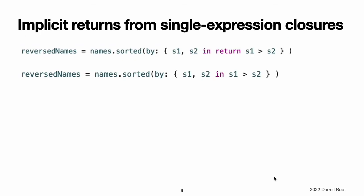Implicit returns from single expression closures. Single expression closures can implicitly return the result of their single expression by omitting the return keyword from their declaration, as in this version of the previous example. Here, the function type of the sorted-by method's argument makes it clear that a Bool value must be returned by the closure. Because the closure's body contains a single expression, S1 is greater than S2, that returns a Bool value, there is no ambiguity, and the return keyword can be omitted.